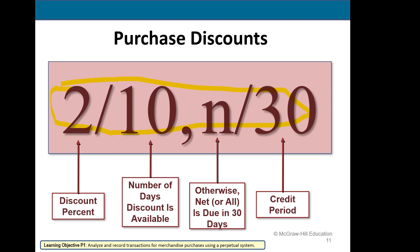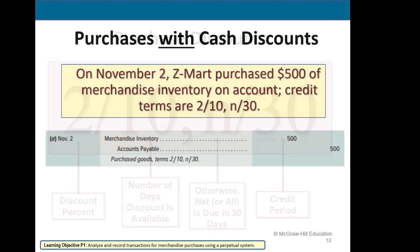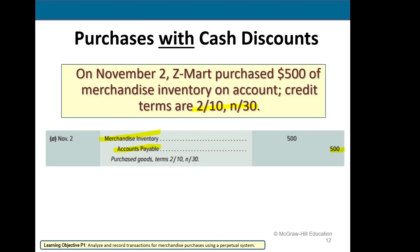The terms 2/10 net 30 mean that if we pay within 10 days we'll get a 2% discount; otherwise the full amount will be due in 30 days. Here's an example: on November 2nd we purchased merchandise for $500 on account, so we debited merchandise inventory and credited the liability accounts payable.